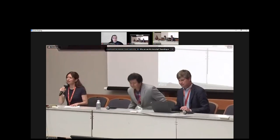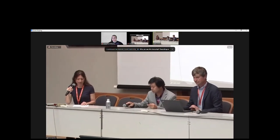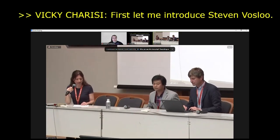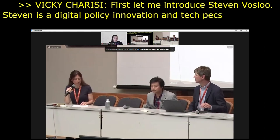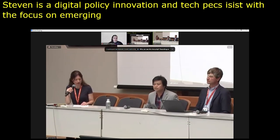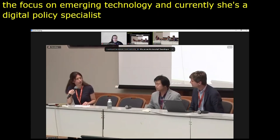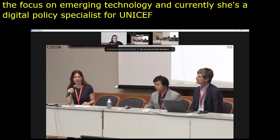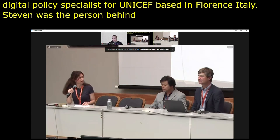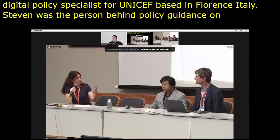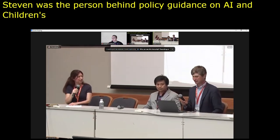Let me introduce Stephen Boslow. Stephen is a digital policy innovation and emerging tech specialist with a focus on emerging technology. Currently, she is a digital foresight and policy specialist for UNICEF based in Florence, Italy. Stephen was the person behind the policy guidance on AI and children's rights at UNICEF.